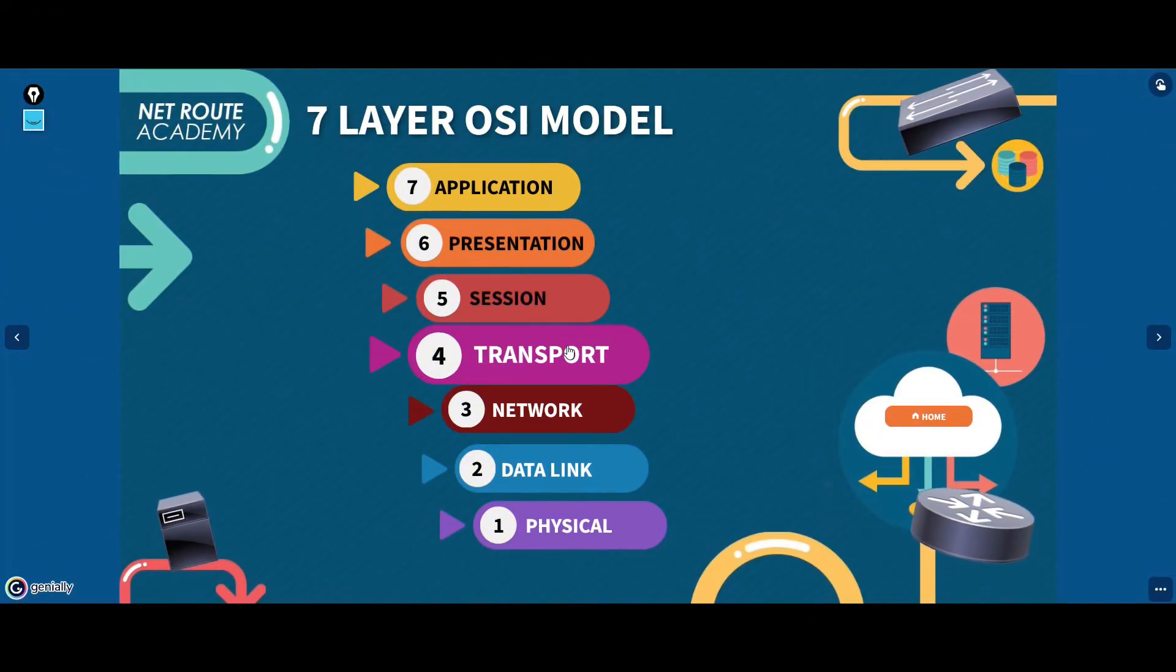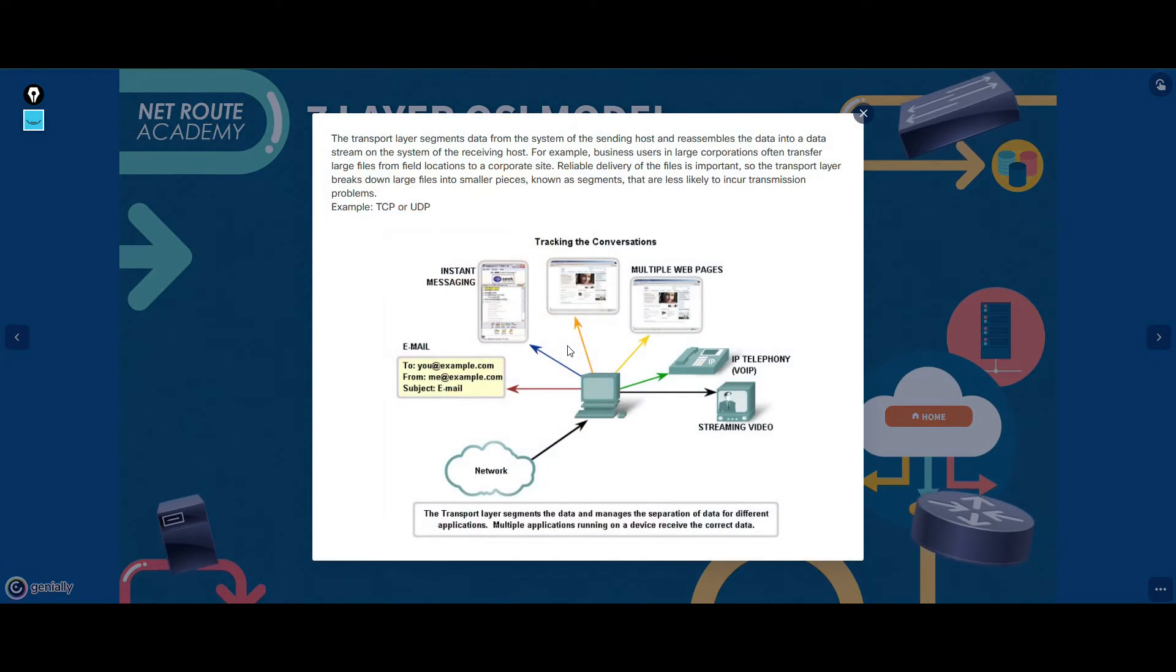Layer 4, the transport layer, is responsible for transporting application layer payloads from one application to another. The two main transport layer protocols are TCP and UDP.